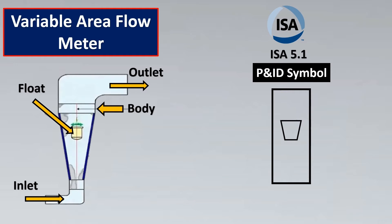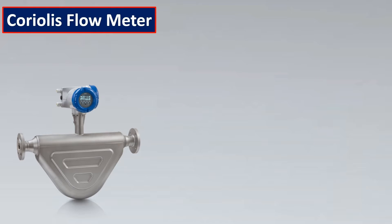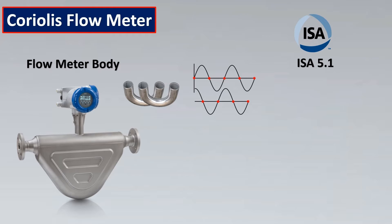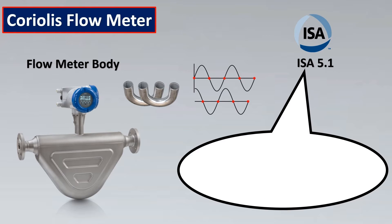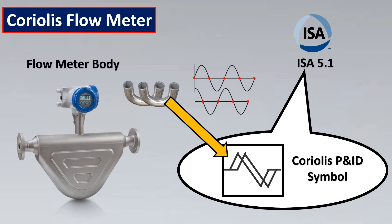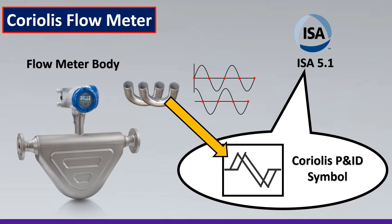The next symbol is for the Coriolis flow meter. Inside the meter body are tubes that vibrate and oscillate — the more they are out of phase, the higher the flow. ISA 5.1 has done something amazing: they mimicked this working concept in the symbol, where the tubes are represented with an oscillating shape and the body is shown around them. This is your Coriolis P&ID symbol.